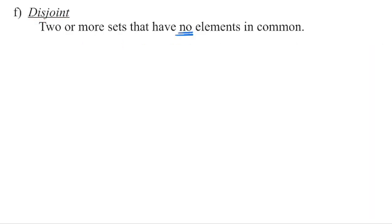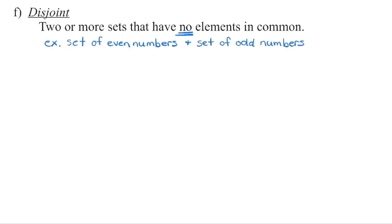Disjoint sets have no elements in common. For example, the set of teams in the Pacific Division of the NHL and the set of teams in the Atlantic Division of the NHL — a team cannot be part of both divisions, so those are disjoint sets. A more mathematical example would be the set of even numbers and the set of odd numbers. A number cannot be both even and odd, so those sets are disjoint — each set contains no elements of the other.